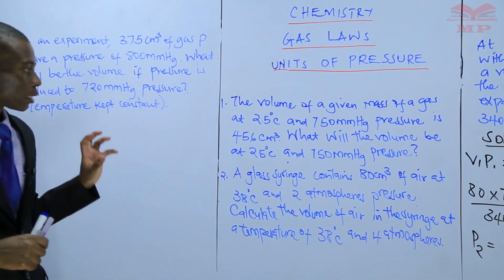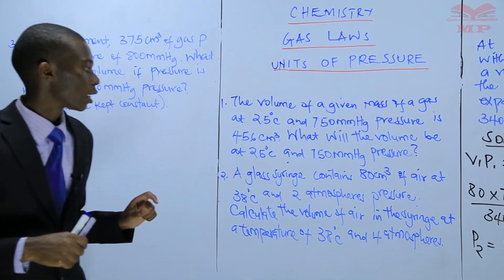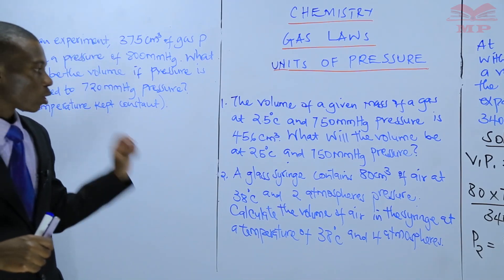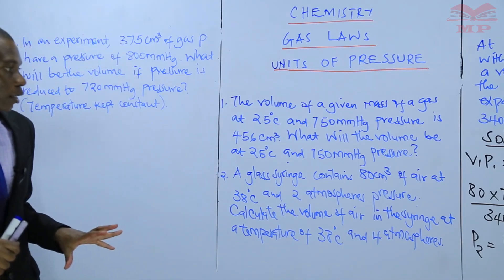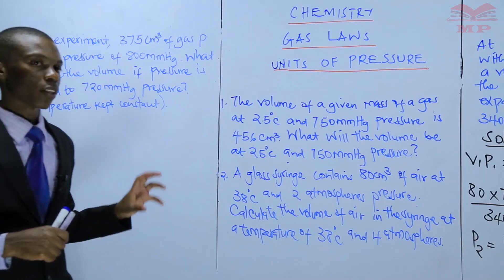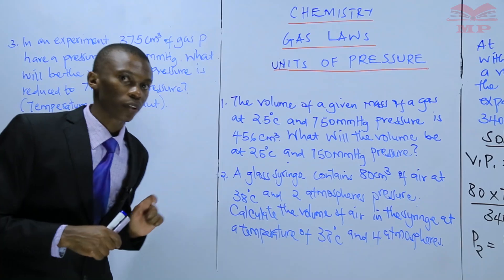The second says: a glass syringe contains 80 centimeters cubed of air at 38 degrees Celsius and 2 atmospheres pressure. Calculate the volume of air in the syringe at a temperature of 38 degrees Celsius and 4 atmospheres.